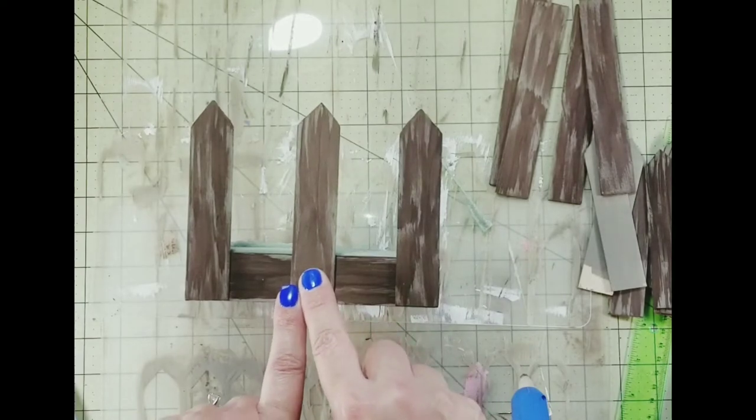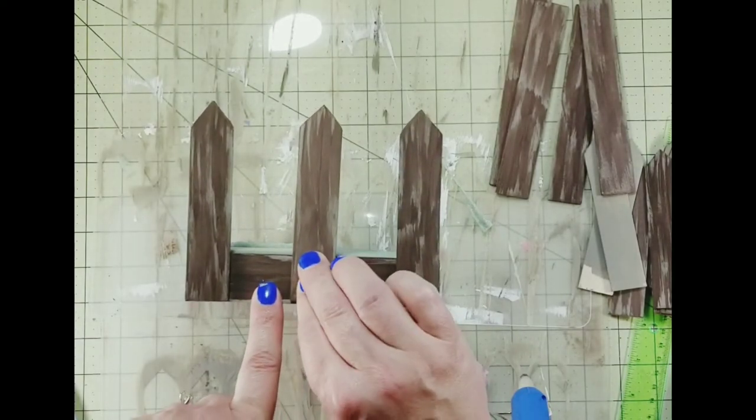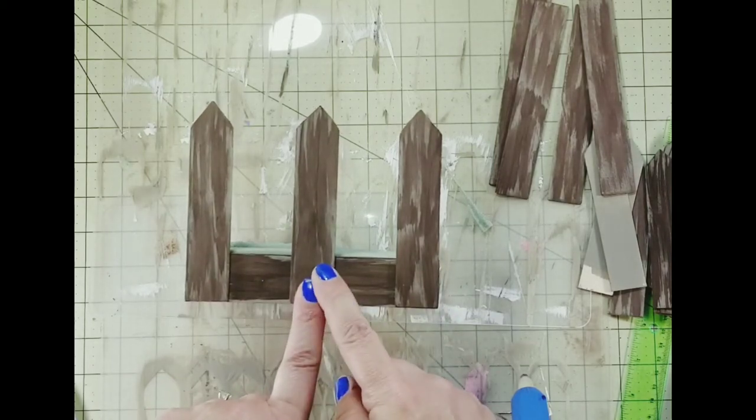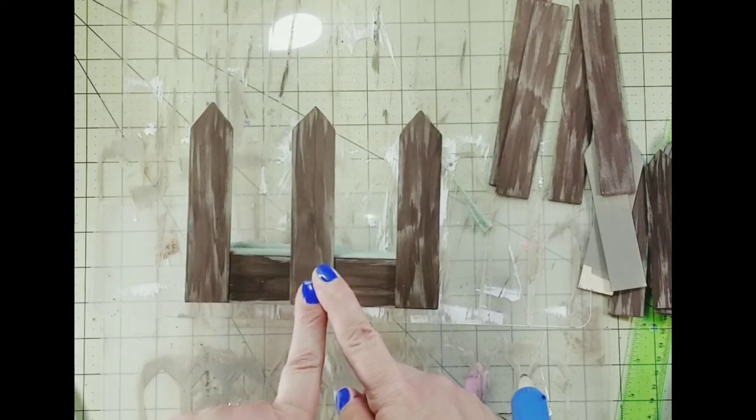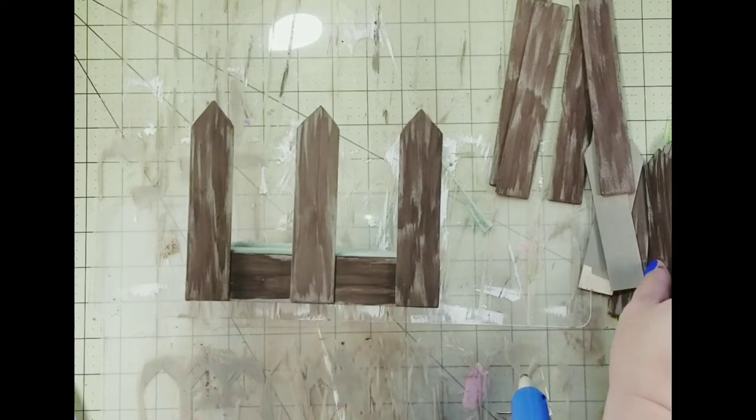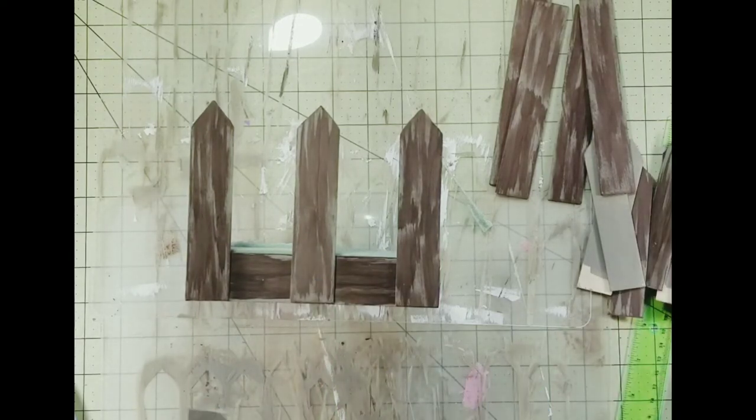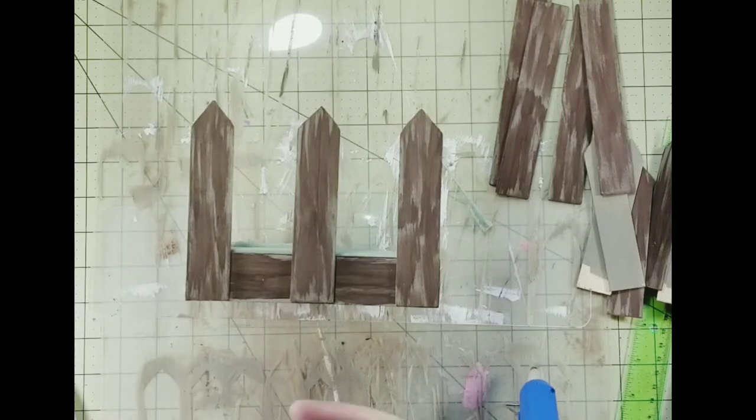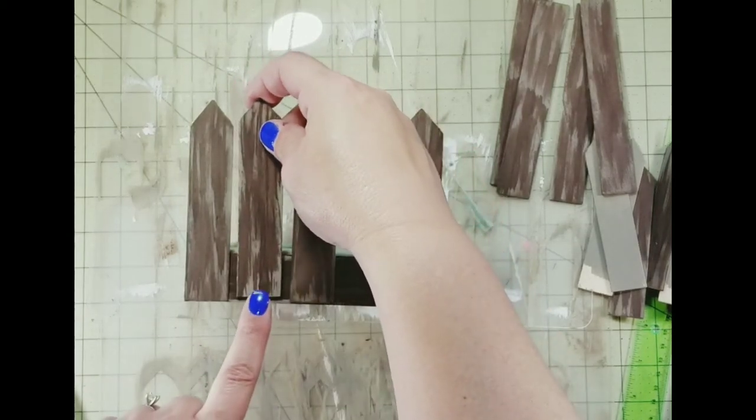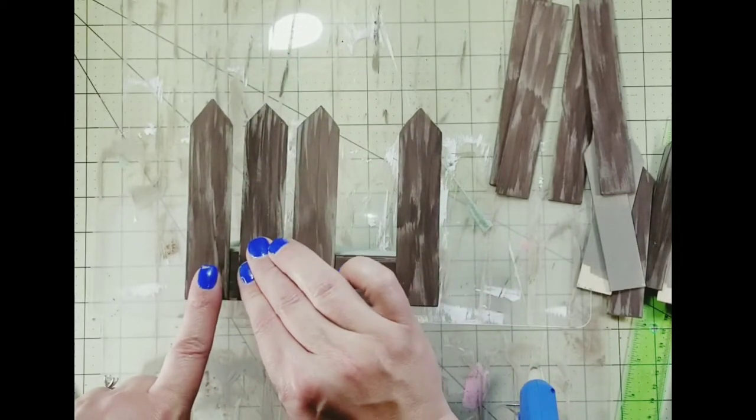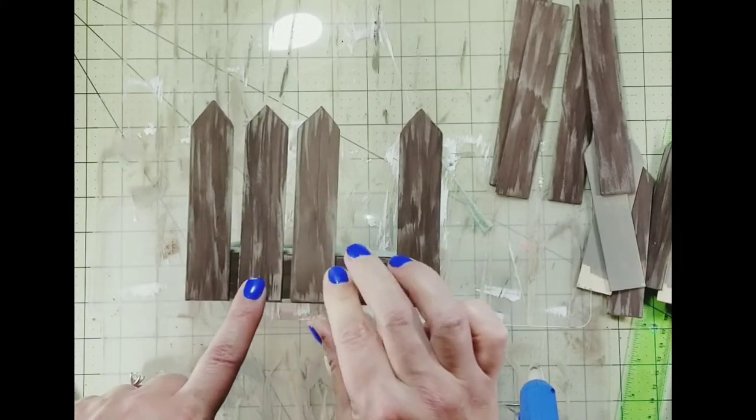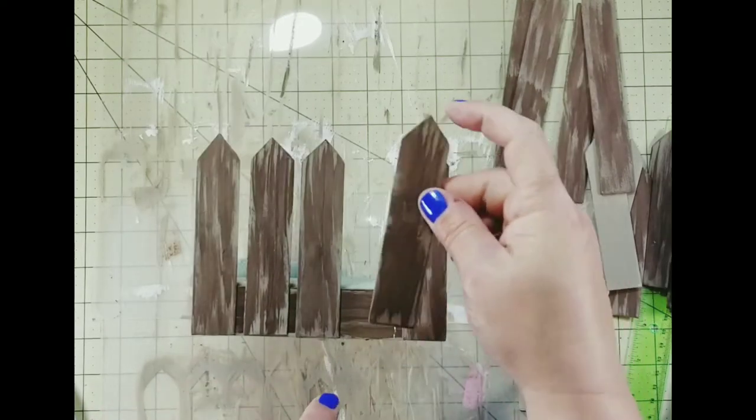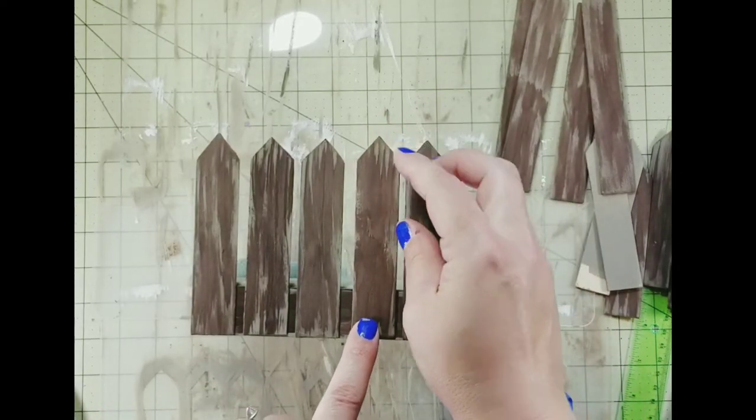Next we're going to assemble our box. I added two of the picket fence posts, say that two times fast, on each end of one side of the shadow box. Then I added a third one in the middle. I didn't measure this but you can if you'd like. Then I added a fourth piece in between the first and second piece, and the fifth piece in between the third and fifth piece.